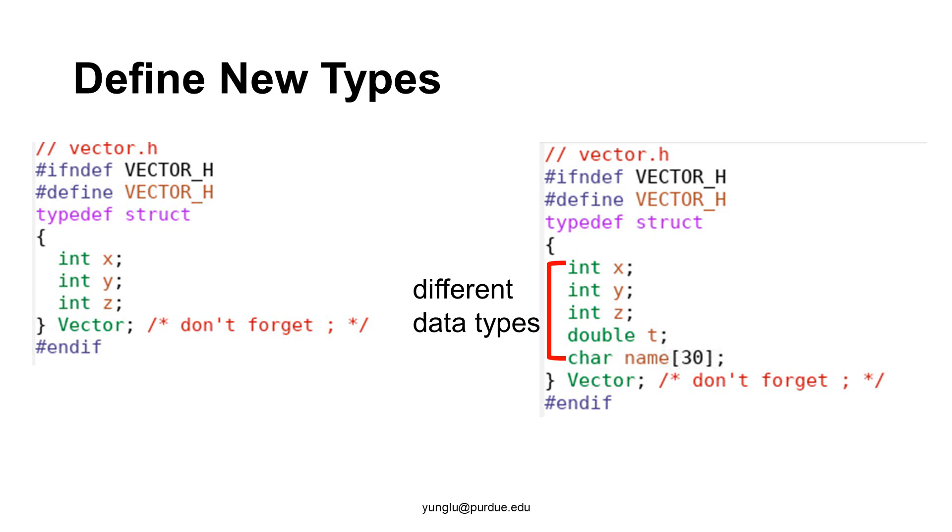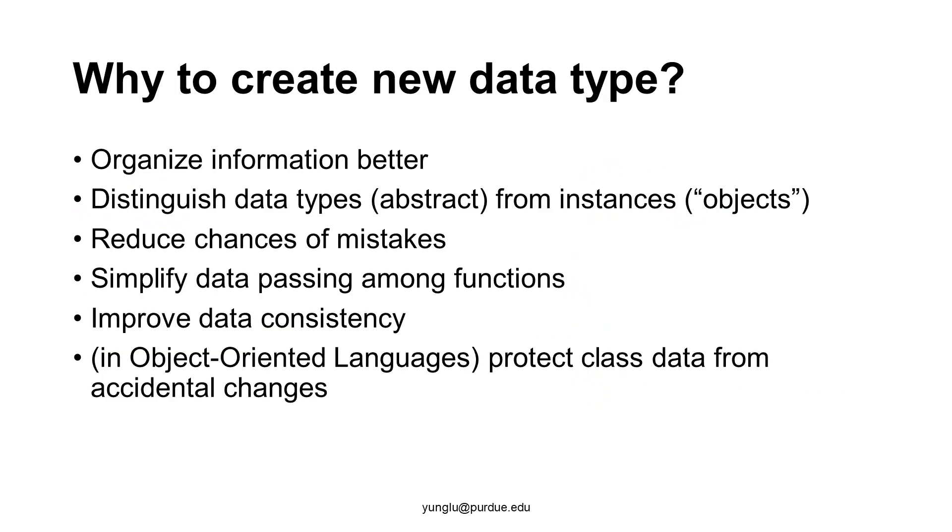Why do programmers want to create new data types? The most important reason is to organize information better. Relevant information should be put together. Consider a three dimensional vector. It is better to put the three directions x, y, and z together.